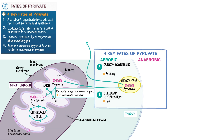Draw the electron transport chain on the inner mitochondrial membrane. Indicate that the products of the citric acid cycle can enter the electron transport chain. Show that the final product is ATP, energy for the cell. Acetyl-CoA is also a substrate for fatty acid synthesis, but we will not describe this here.